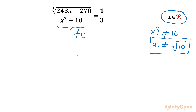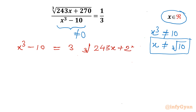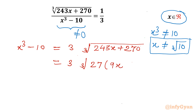Now I will cross multiply the numerator and denominator. So I will be writing x³ - 10 equal to 3 times the cube root of (243x + 270). Now I can see 27 is the common factor inside this cube root. So if I take 27 common inside, it becomes 27 times (9x + 10), since 27 times 9 is 243.